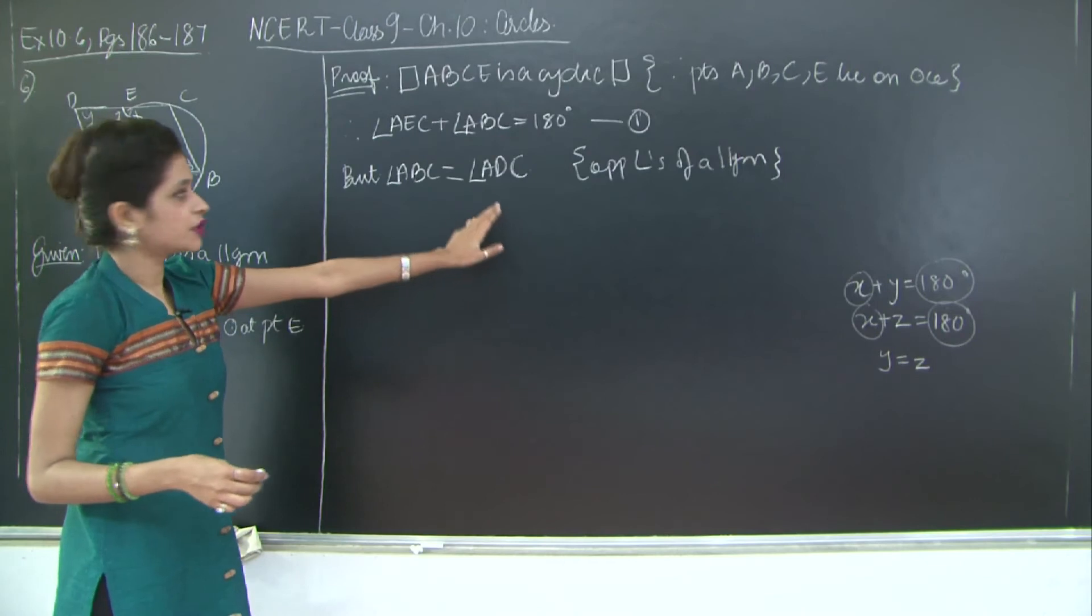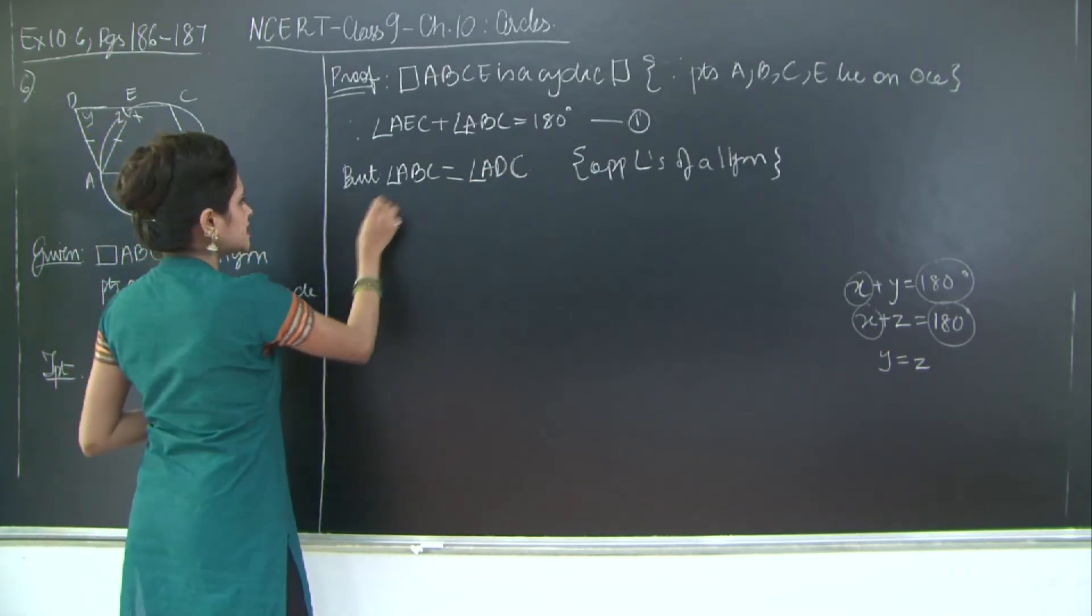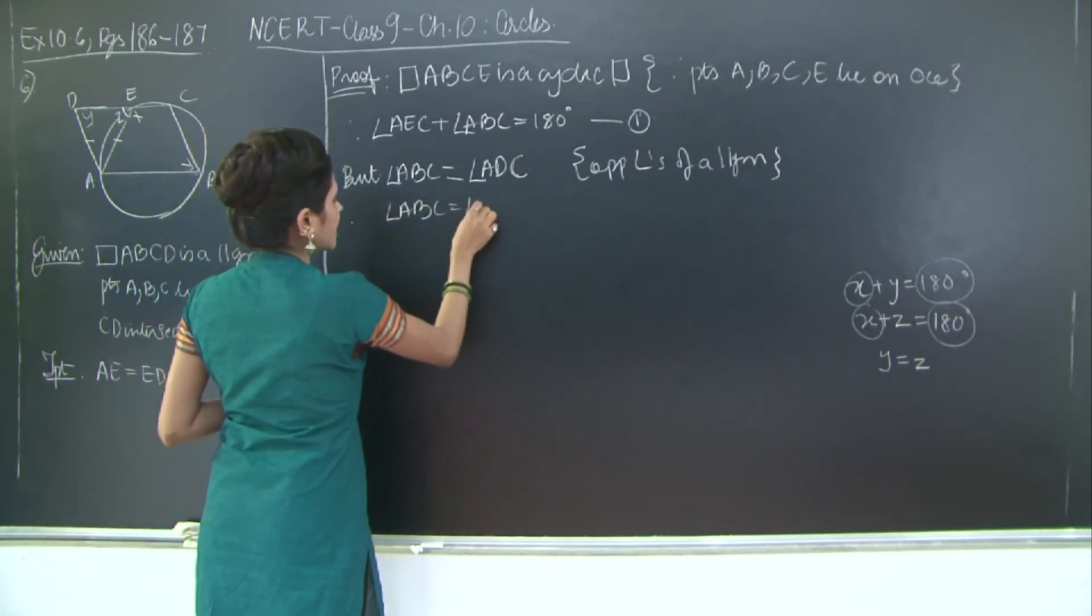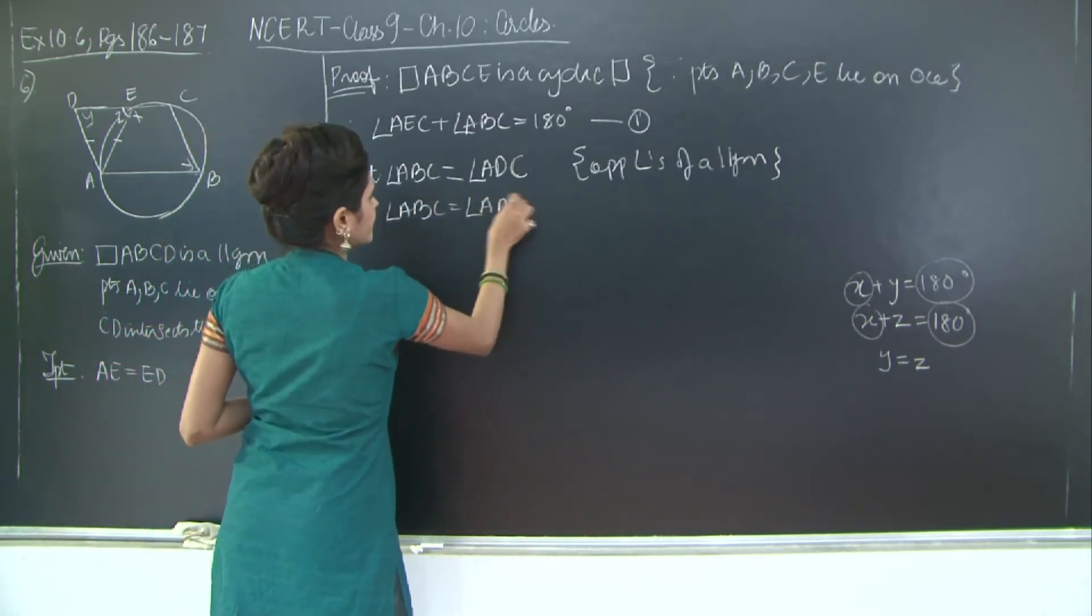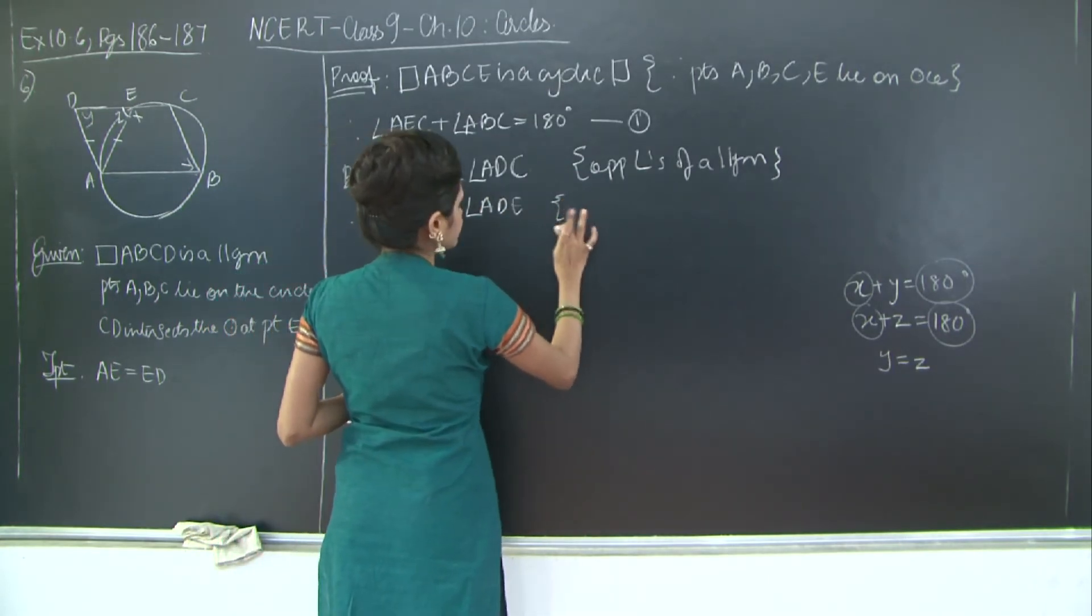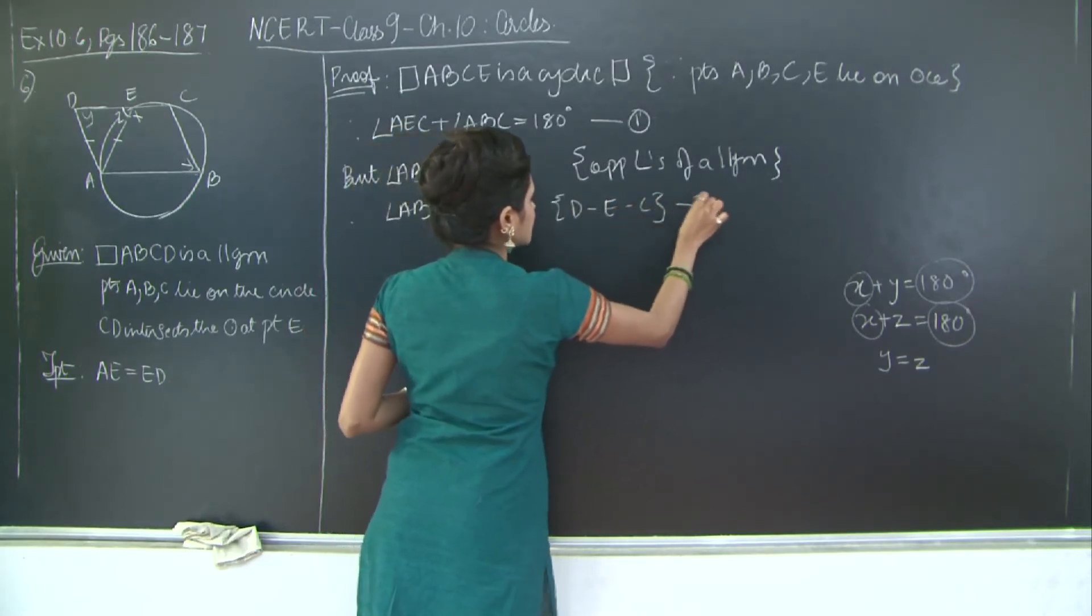So instead of ADC I can write ADE because E lies on the line segment CD. So angle ABC is equal to angle ADE. And I will give my reason as D, E, C. D dash E dash C. Let's mark this as two.